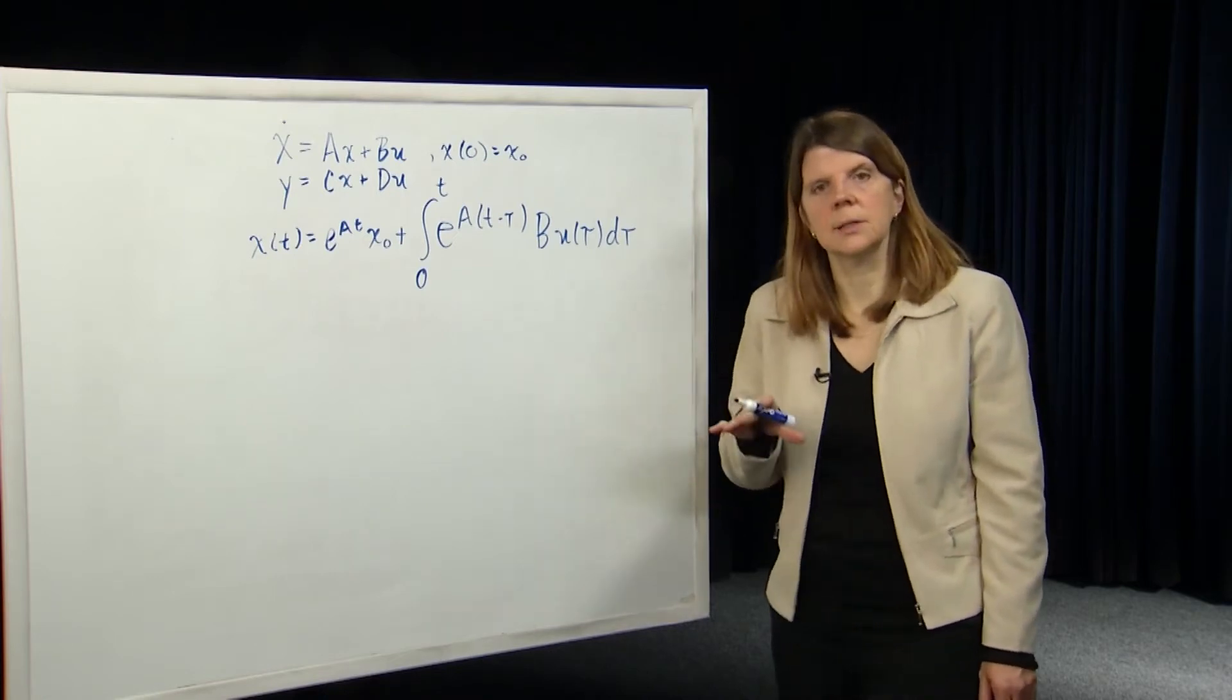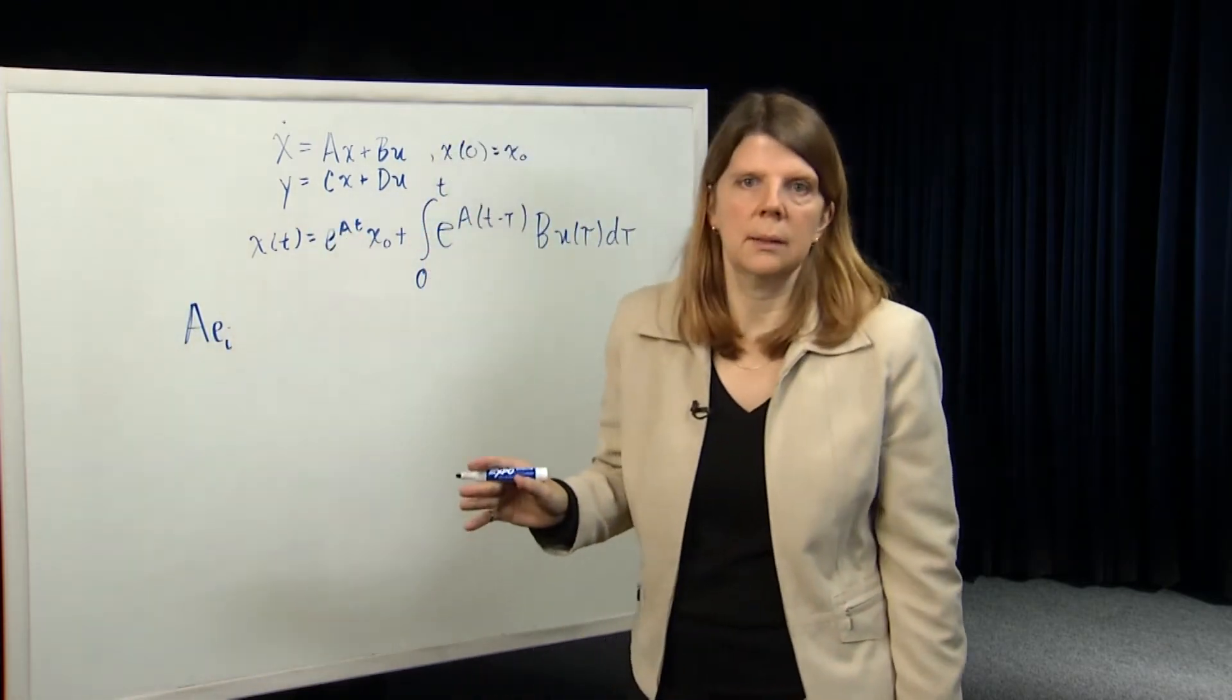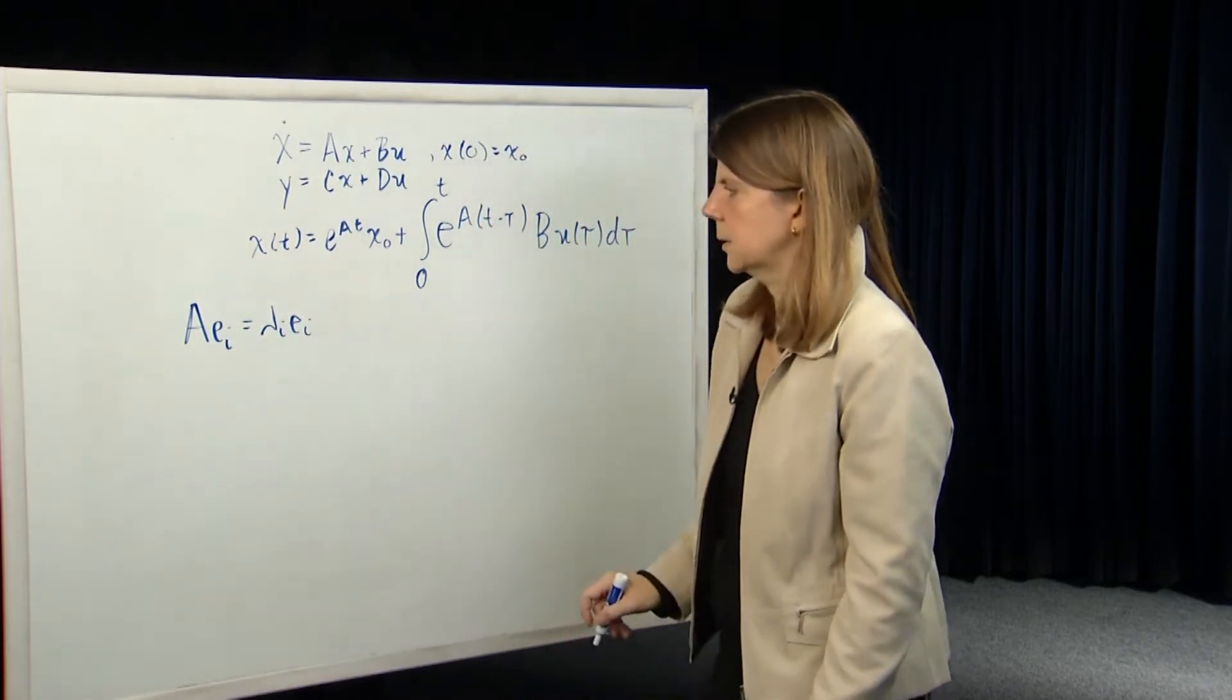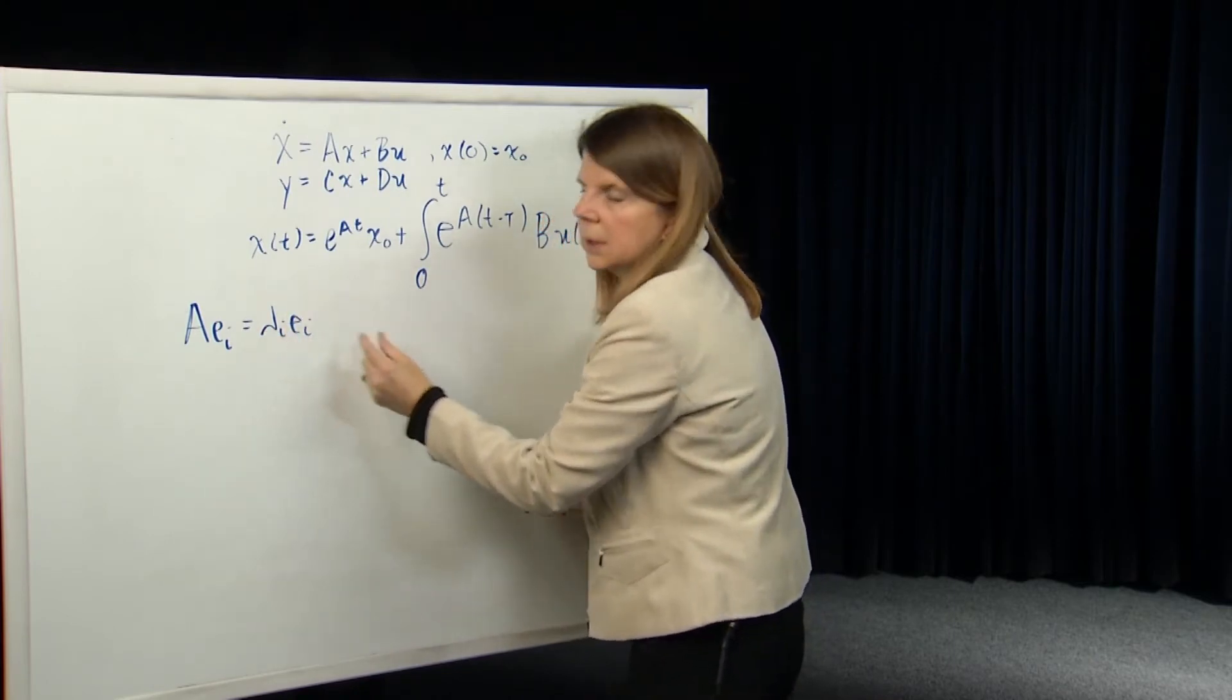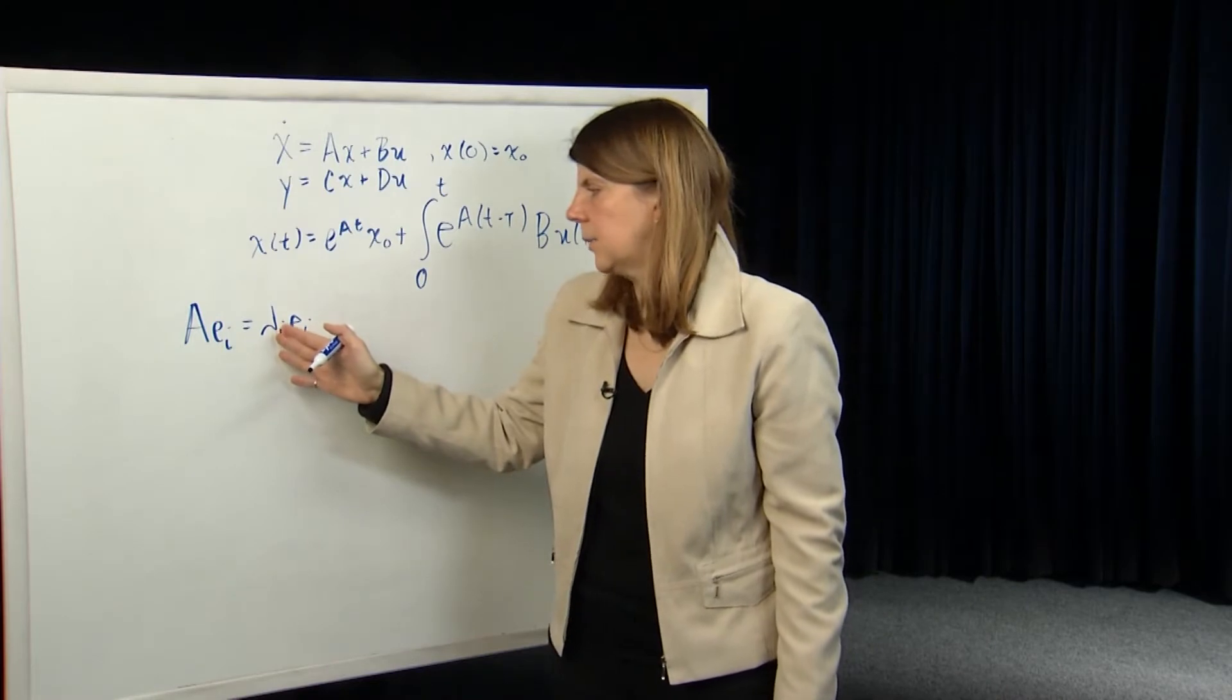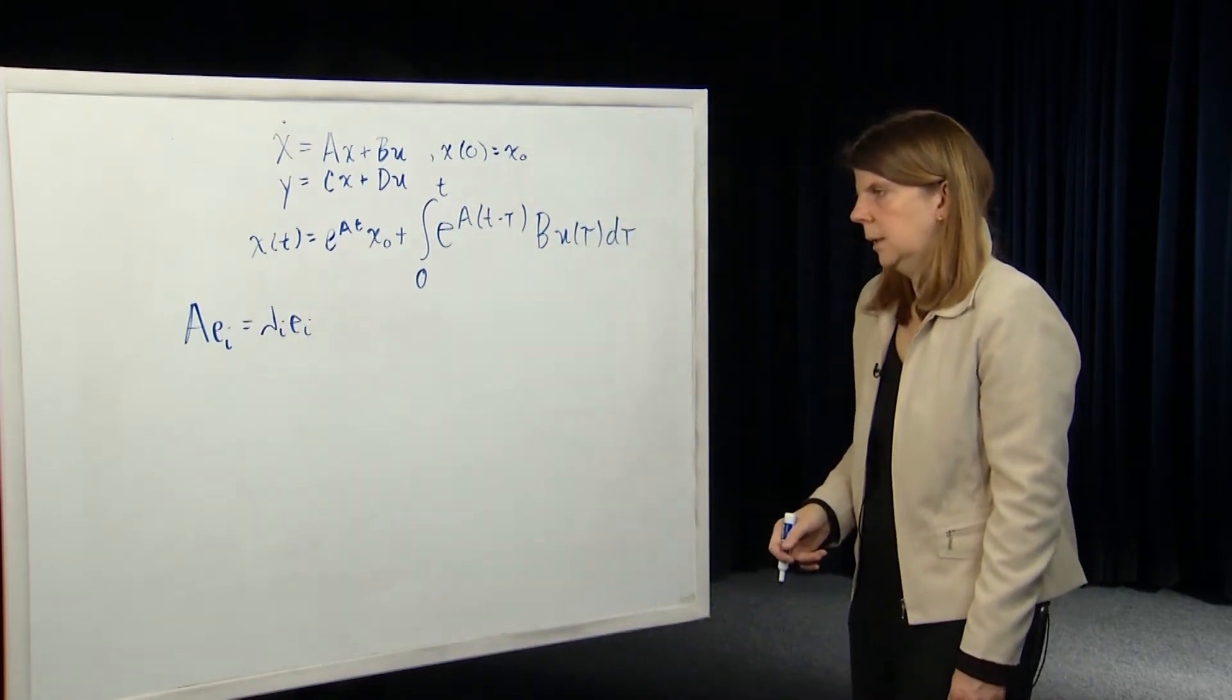So last day, in the last module, we introduced the concept of eigenvalues and eigenvectors. We remember that we have a matrix A, let's suppose it's a real n by n matrix. And we define eigenvalue eigenvector pairs, lambda i, ei, in the following way. So they're the special possibly complex scalars and possibly complex vectors in Rn such that this equation is true: Aei equals lambda i ei. So an n by n matrix will have n eigenvalues. And we discussed last day that if the eigenvalues are all distinct, then there exist n linearly independent eigenvectors.